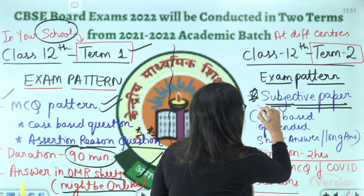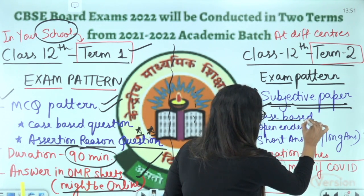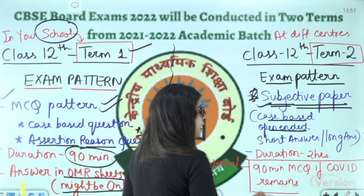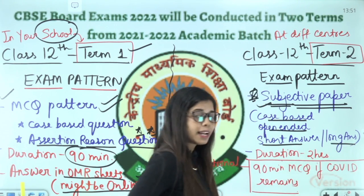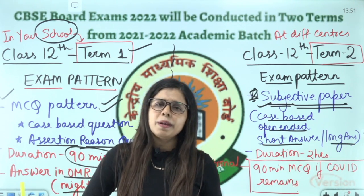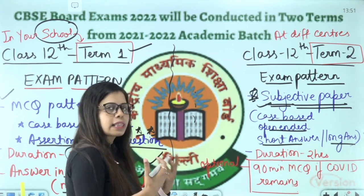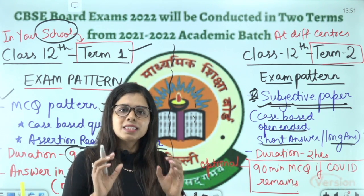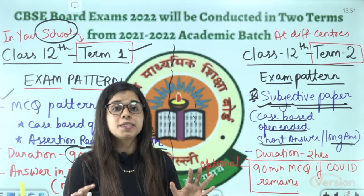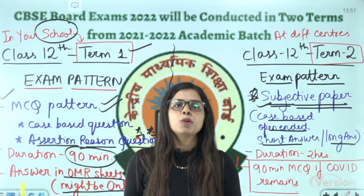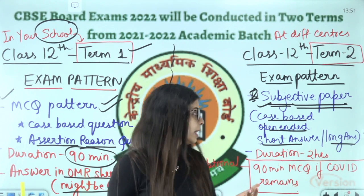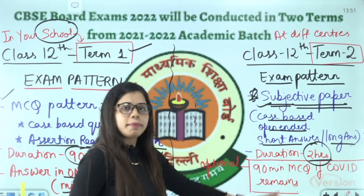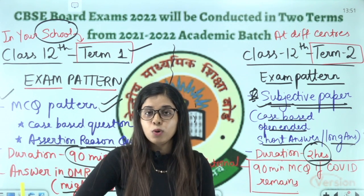Another important thing: in the subjective paper for Term 2, there will be case-based questions, open-ended questions, short answer type, and long answer type questions — like regular papers with two marks, three marks. This pattern has not yet been updated on CBSE's website, but as soon as we know, we will tell you. The duration of the subjective exam will be two hours.